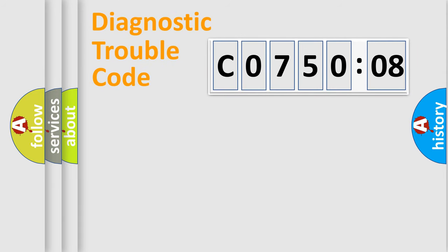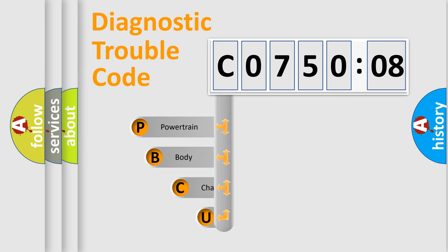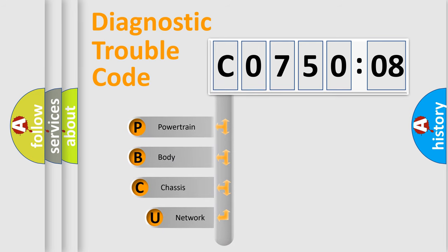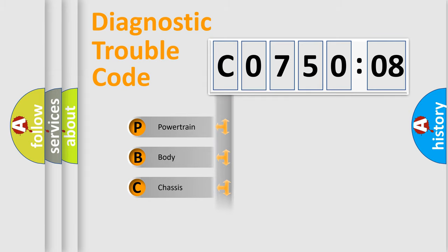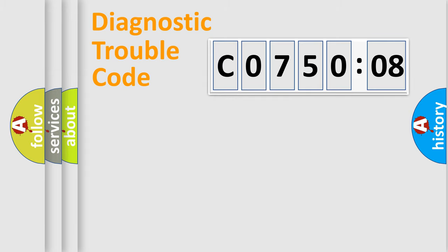Let's do this. First, let's look at the history of diagnostic fault code composition according to the OBD2 protocol, which is unified for all automakers since 2000. We divide the electric system of automobile into four basic units: Powertrain, Body, Chassis, and Network.